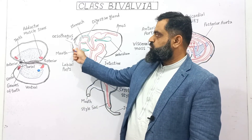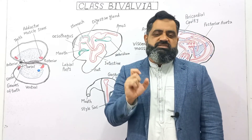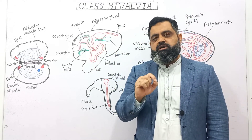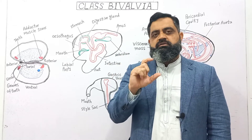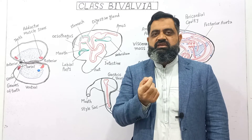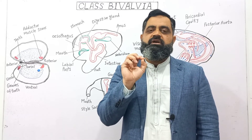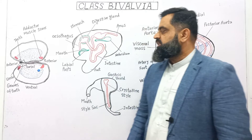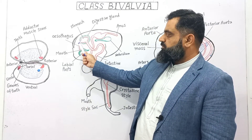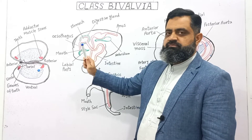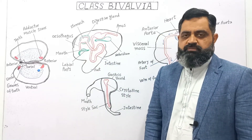The mouth cavity leads into a tube-like structure known as the esophagus, where mucus is secreted. The food particles are joined with a string of mucus — mucus is sticky and food particles adhere to its surface. This string of mucus along with food particles is then moved into the stomach, which is the main digestive organ of the mussel.